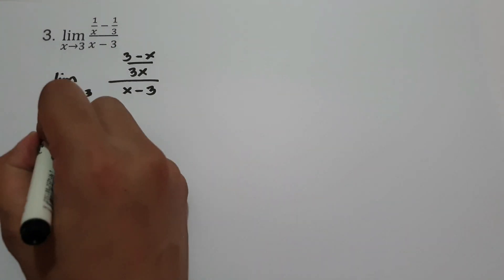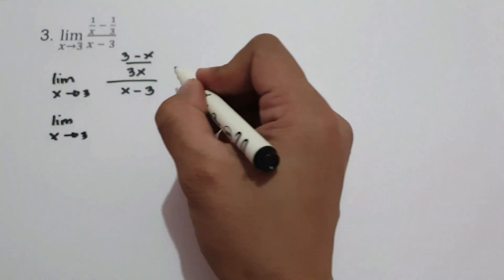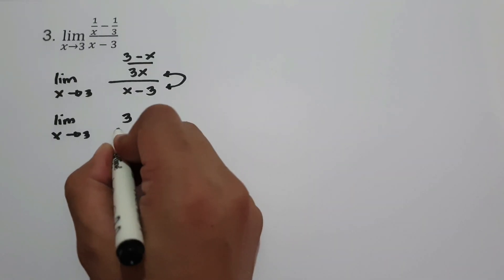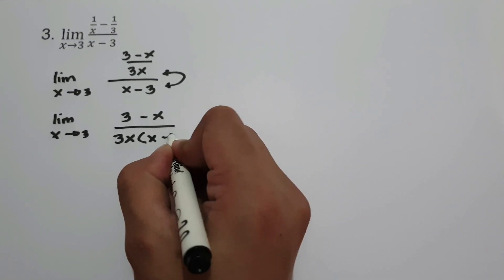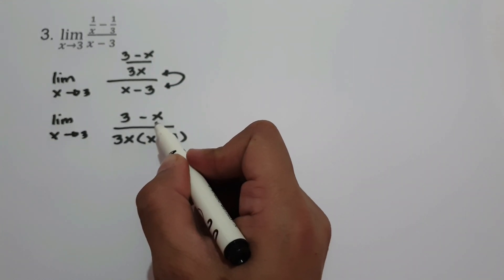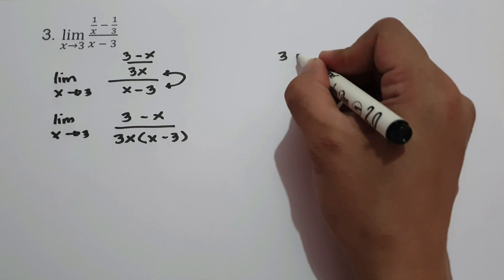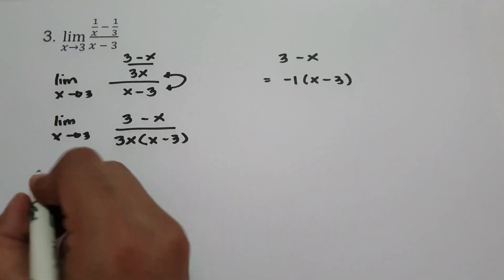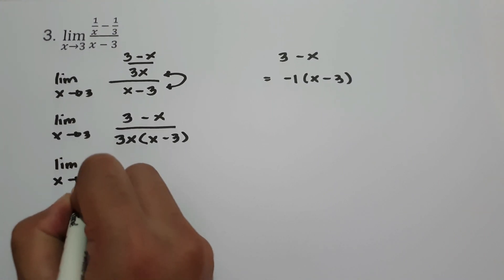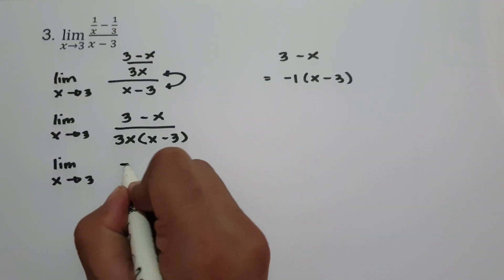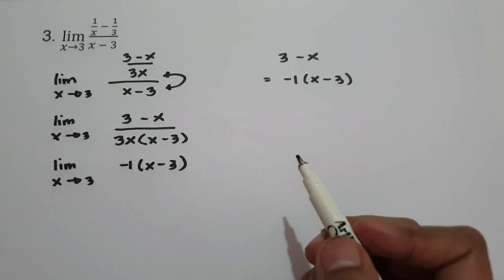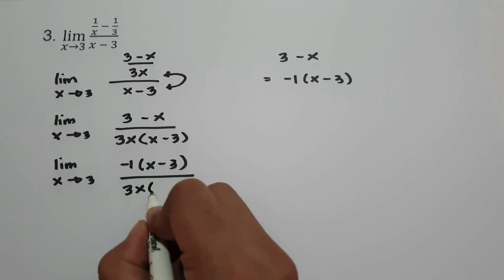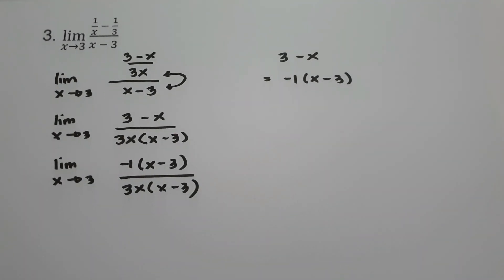Then to simplify, let's have the limit as x approaches 3. Let us multiply 3x and x minus 3. So we have 3 minus x over 3x multiplied by x minus 3. And let us rewrite 3 minus x in the form of negative 1 times x minus 3, since 3 minus x is the same as negative 1 times x minus 3. So let's have the limit as x approaches 3: negative 1 times x minus 3 over 3x times x minus 3. So let us cancel x minus 3.